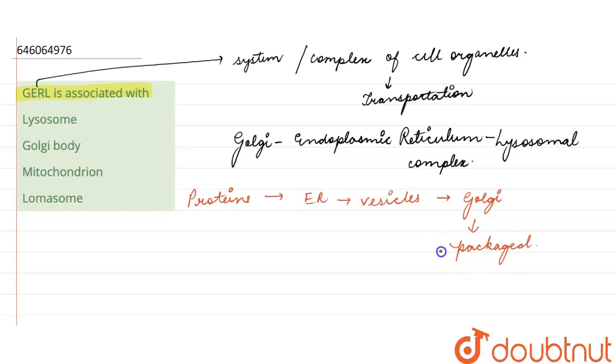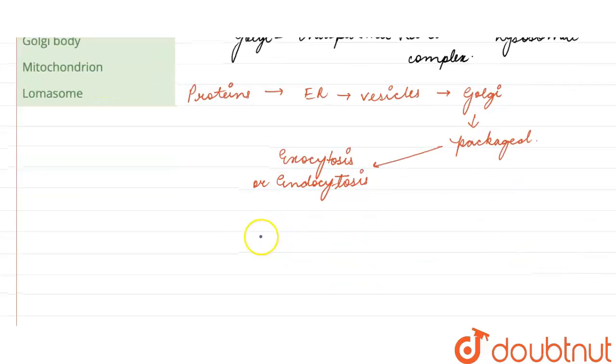And are transported either by exocytosis, that is out of the cell, or endocytosis, that is inside the cell. And if there is digestion required, then these proteins or other molecules that are to be transported into the cell are digested in the lysosomes.